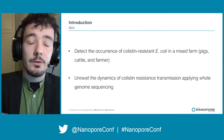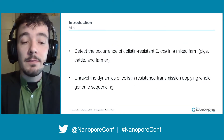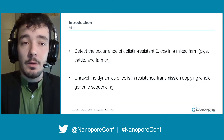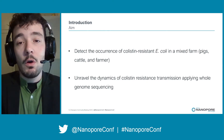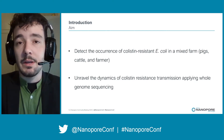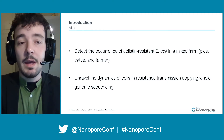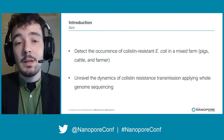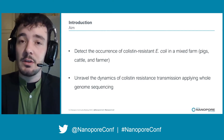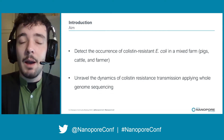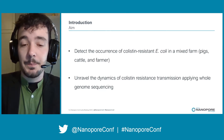The aim of our study was to detect the occurrence of colistin-resistant Escherichia coli in a mixed farm and to unravel the dynamics of colistin-resistant transmission applying whole genome sequencing.